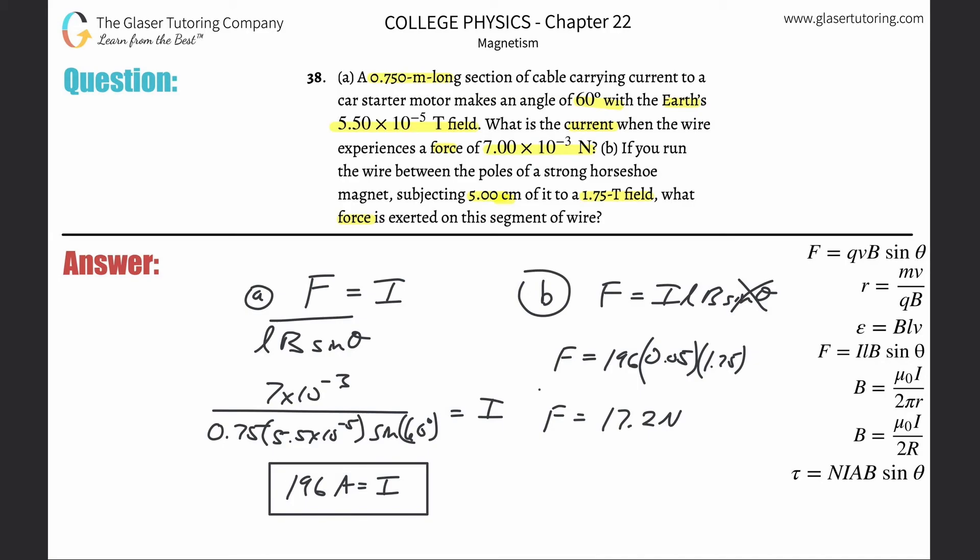Obviously if you assumed it stayed the same at 60 degrees, you would have to plug in sine of 60 here and multiply that. The answer is going to be different, but you tell me what's right. Whatever the book says is right. If you're reading this independently, it's not clear to me.